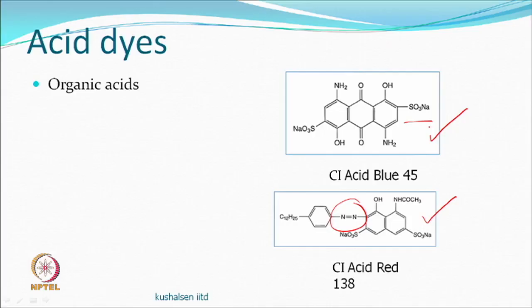The fibres used with acid dyes — wool, silk, nylon — will assume a positive charge under acidic conditions, so the negatively charged dye gets attracted and forms an ionic bond. Acid dyes are organic acids; you can react them with alkali to make sodium salts, and they are applied through acidic medium.